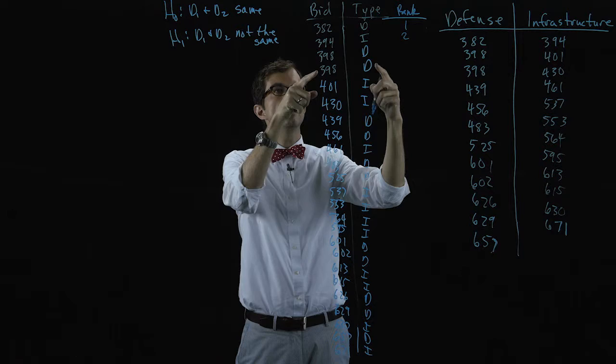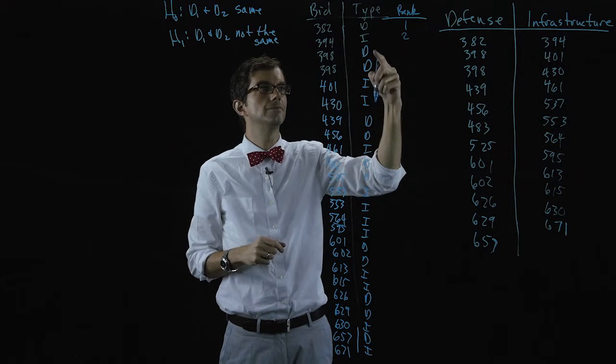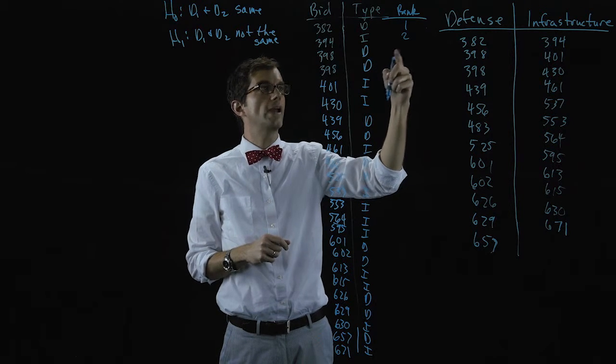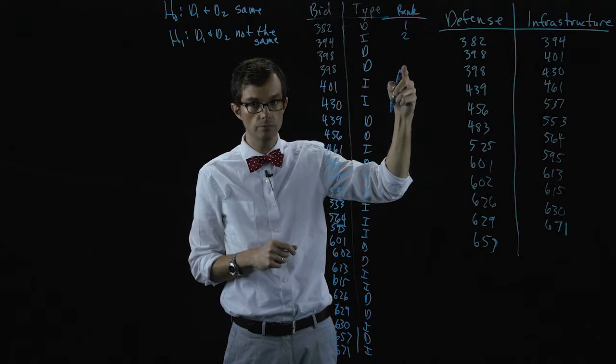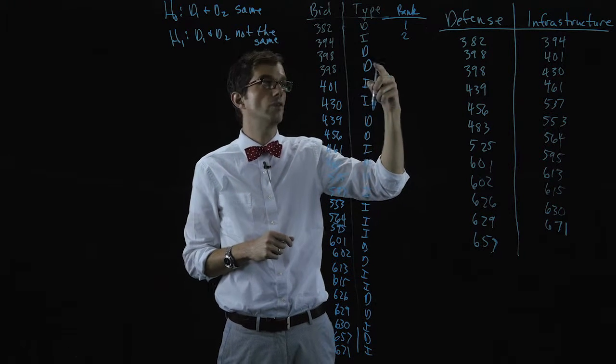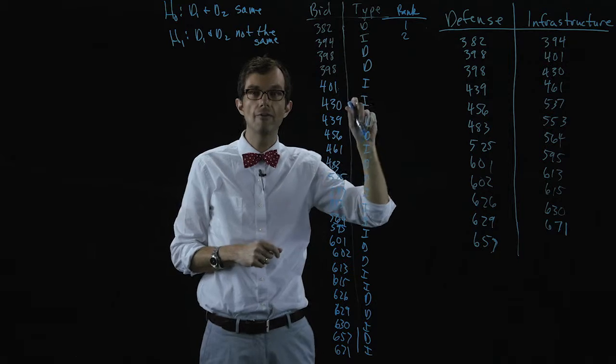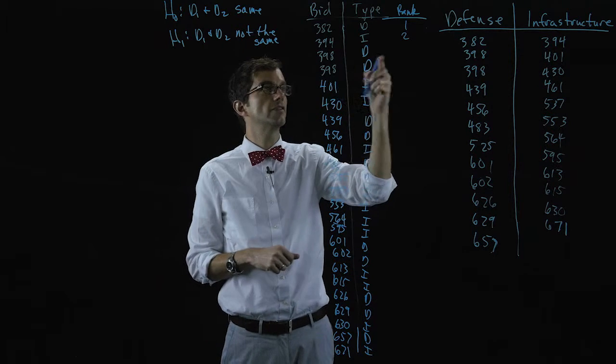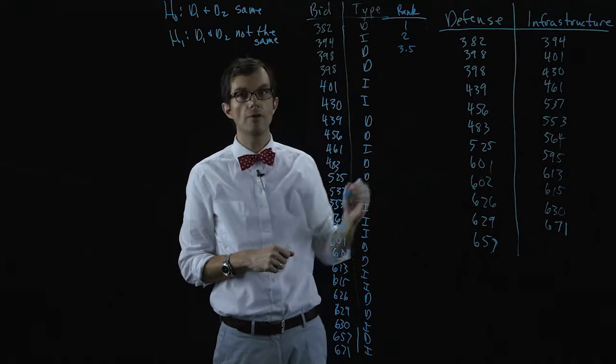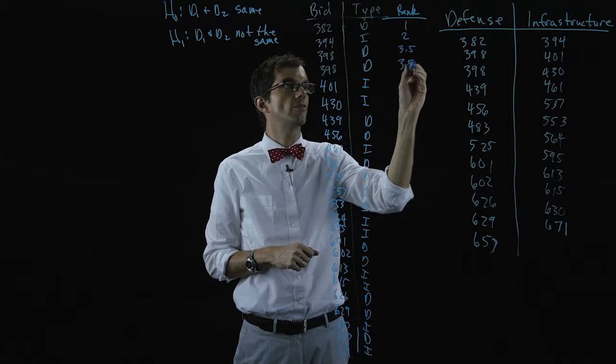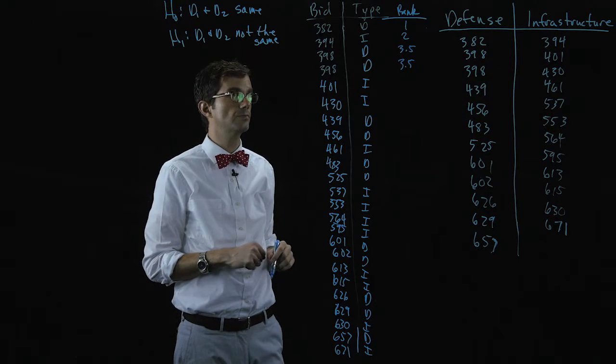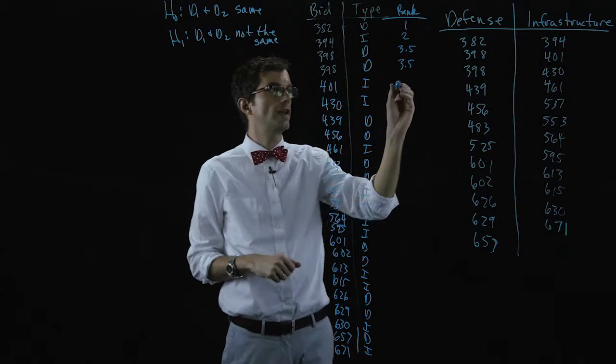Here we have two tied bids. So we can't use rank three and four because they're both the same. So what we want to do is take the average of three and four. So this is going to have a rank of three point five and this is going to have a rank of three point five. Then we start back up with the next number, five.